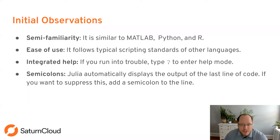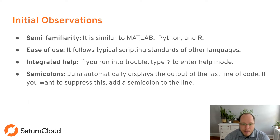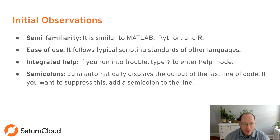Julia follows typical scripting standards of other languages, so there's not a lot you need to change in your approach to get into it. It also has a really nice integrated help — just type a question mark and it'll enter help mode, where you can get information about any function. One last note: you'll see semicolons occasionally at the end of phrases. Julia automatically displays the output of the last line of code, so to suppress that, you put a semicolon at the end.